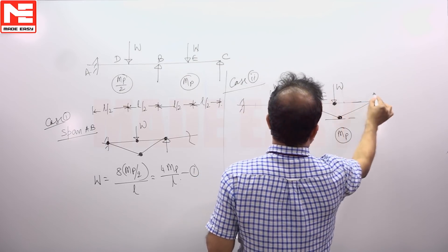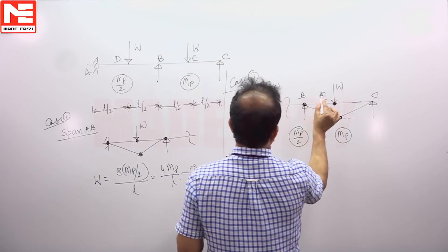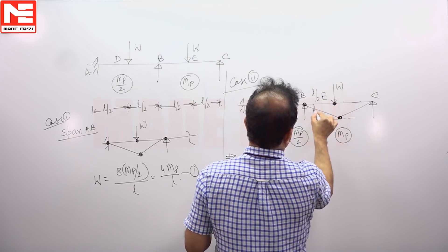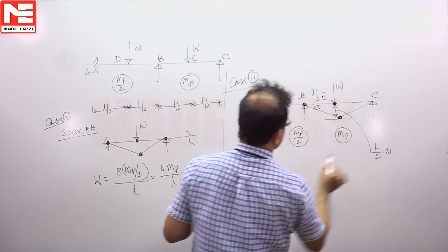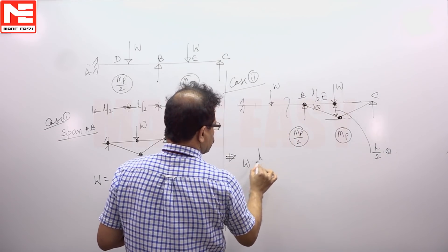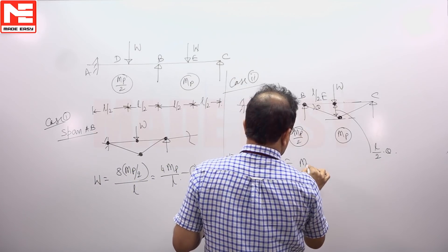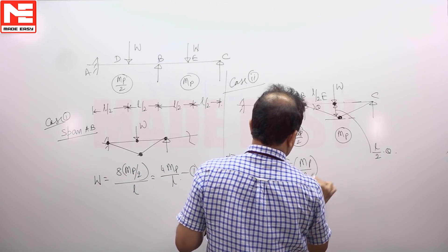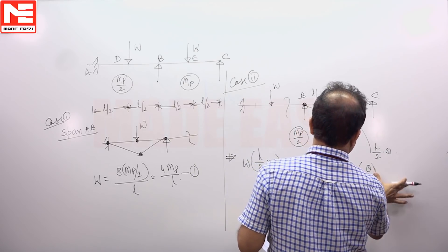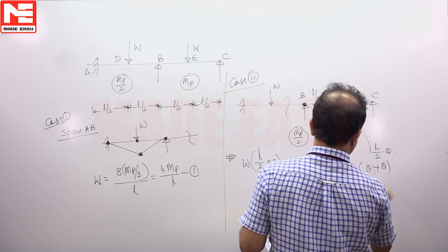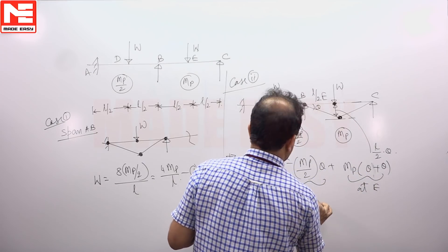This point is B, E, C. So we have to write external is equal to internal. So this is L by 2. This angle is theta. So this value is L by 2 into theta. So external work done is W into L by 2 into theta. Internal work done MP by 2 into theta plus MP into theta plus theta. This is work done at E. This is work done at B.